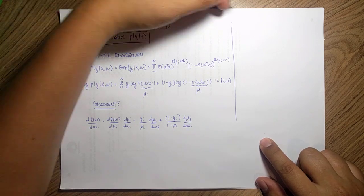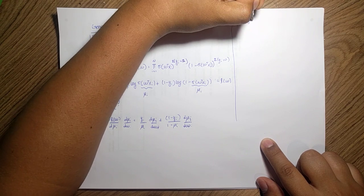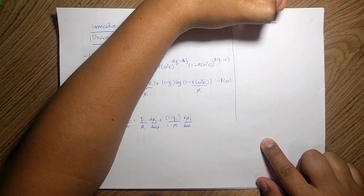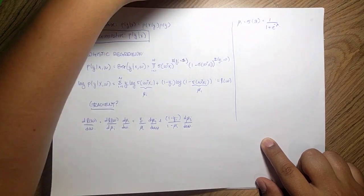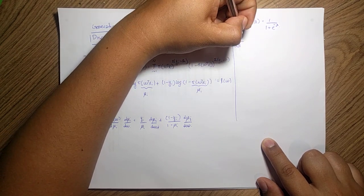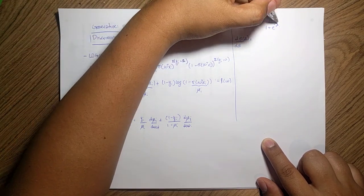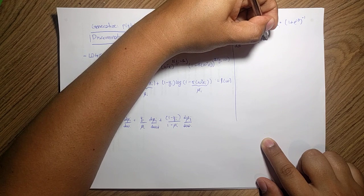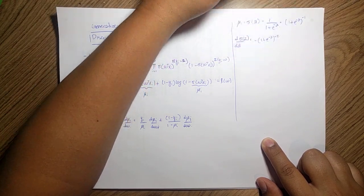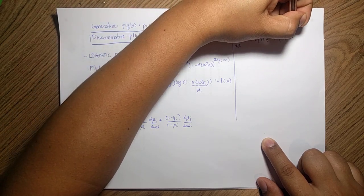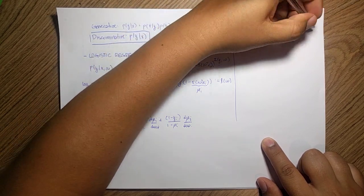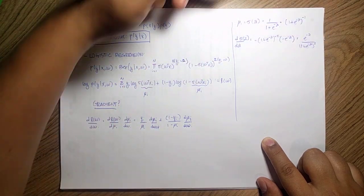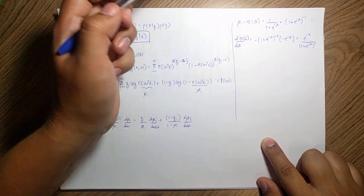Now, mu_i is just the logistic function of a = w^T x_i, defined as 1 / (1 + e^{-a}). To compute d(sigma(a))/da, we treat it as (1 + e^{-a})^{-1}, bring the exponent down, and take the derivative inside. This gives e^{-a} / (1 + e^{-a})^2, which is not yet in a handy form.